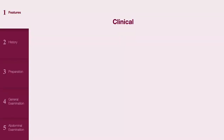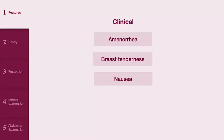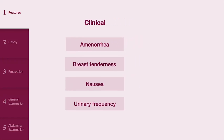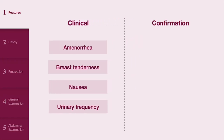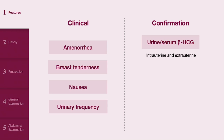Clinical features of pregnancy include amenorrhea, breast tenderness, nausea and urinary frequency. It can be confirmed with urine or serum beta HCG, which is positive in both intrauterine and ectopic pregnancy.